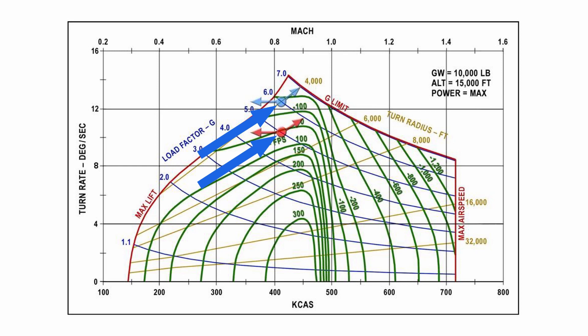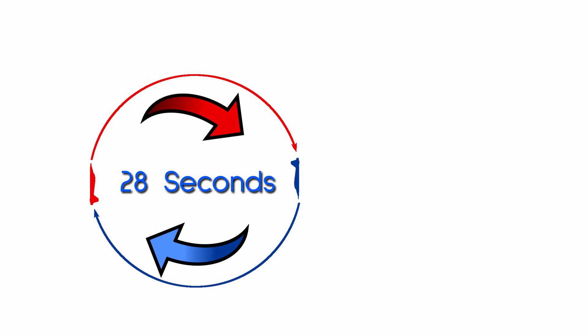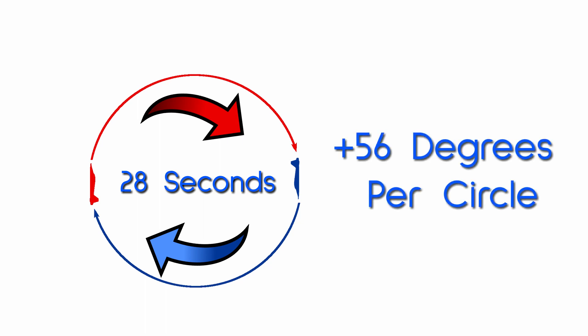You might have wondered what these two things are on the chart. These represent the student and the bandit when the student is given an advantage. In this case the student is allowed to pull up to 6g while the bandit is limited to just 5. This is typically done to demonstrate how to exploit an advantage when flying the same airframe. Without the limit on the bandit there wouldn't be a difference in performance to exploit. It might not seem like much, but it's actually a lot. Here we can see the student is getting approximately 2 degrees per second over the bandit and a turn radius that's 800 feet smaller. Since they would be completing a 360 degree circle every 28 seconds, that means the student is gaining a whopping 56 degrees of advantage every time they circle.